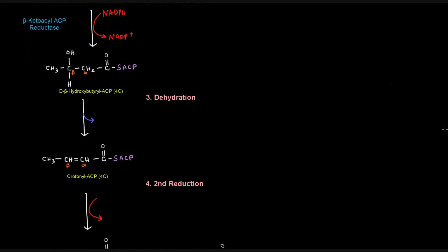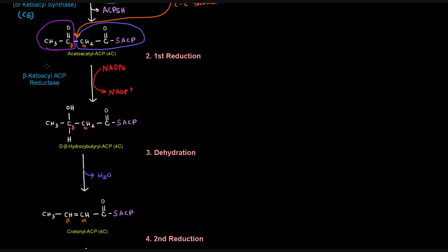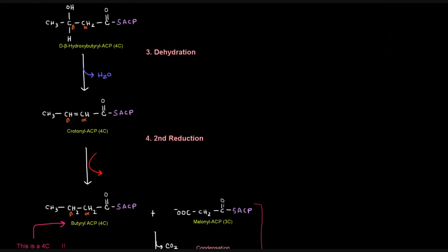Then we have the dehydration reaction — we're going to lose water in this step. Before moving on, it's worth noting that the beta-carbon goes from being a carbonyl (a ketone) to an alcohol in that first reduction — that's the actual reduction at the beta-carbon, hence the term beta-reduction.